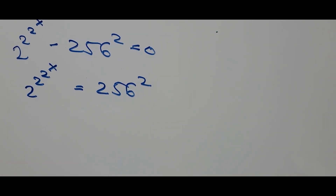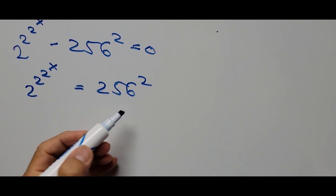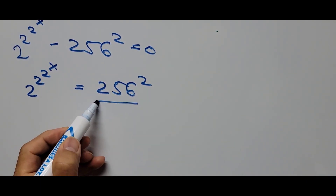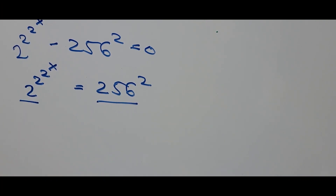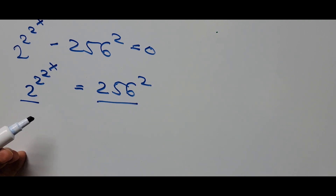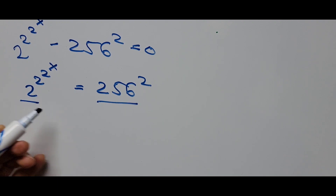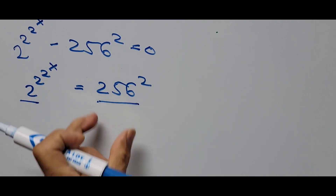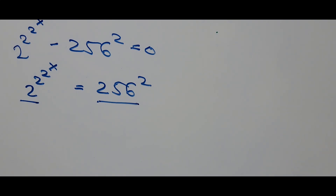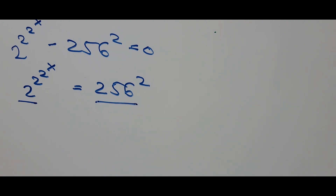Now we focus on the constant 256 on the right and the base of 2 on the left side of the equation. Since we have a nested exponent on the left, our aim is to establish a common base. If we can convert this big number on the right to a power of 2, we can match the bases. So the first step is finding that identical base.